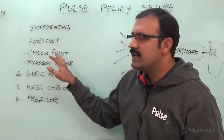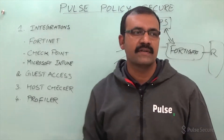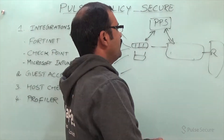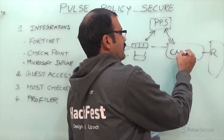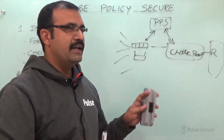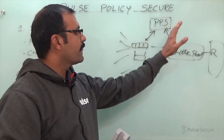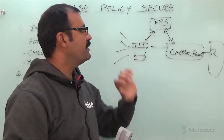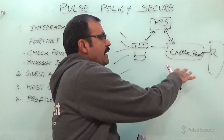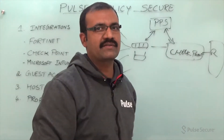Coming to Checkpoint — Checkpoint integration is based on identity-based integration. This means the user sessions, IP address, and role information from PPS will be communicated to the Checkpoint firewall, where the Checkpoint firewall will take control on end users whether to allow or deny access to resources.